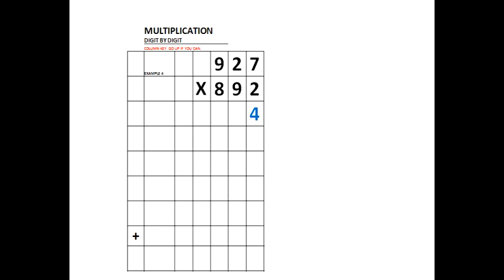There is the 4 for the 14 with 2 times 7, and it started in the 1's column. There's the 1 next to the 4. 2 times 2 is 4, and that will be under the 1 because it's in the next column to the left of the original 4 with 14. 2 times 9 is 18 — there's the 8, and there's the 1.